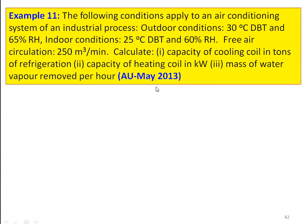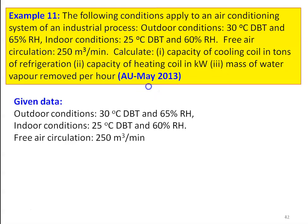Example number 11: The following conditions apply to an air conditioning system of an industrial process. Outdoor conditions are 30°C dry bulb temperature and 65% relative humidity. Indoor conditions are 25°C dry bulb temperature and 60% relative humidity. Free air circulation is 250 m³ per minute. Calculate: capacity of the cooling coil in tons of refrigeration, capacity of the heating coil in kilowatts, and mass of water vapor removed per hour.